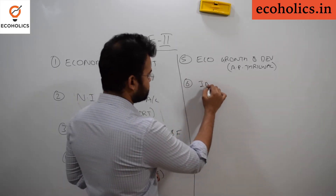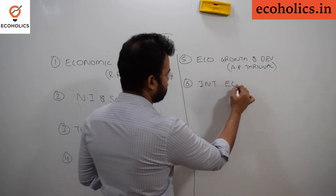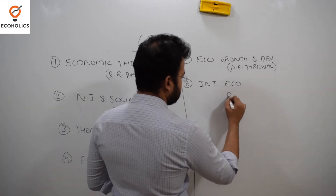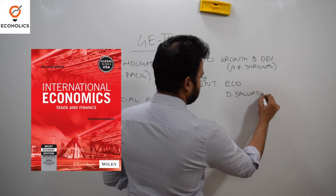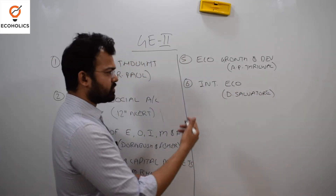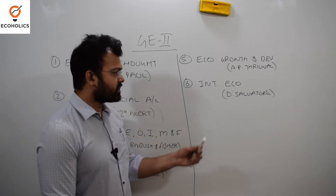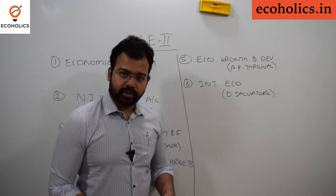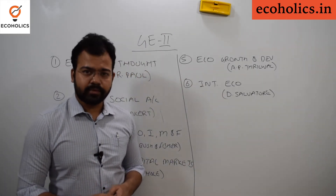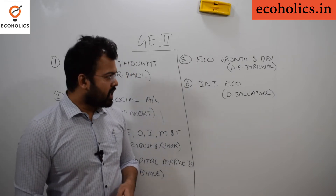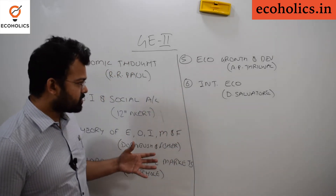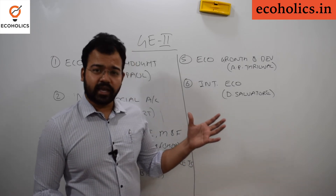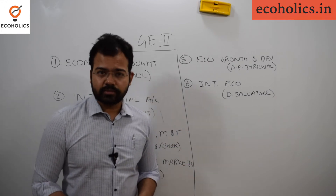The sixth topic is International Economics, and for International Economics there is only one book — the best book known as Dominic Salvatore, which is considered the Bible for International Economics. If you do not have this book, you can take a PDF from the instructor via WhatsApp — the number is given in the description. You can also find these books online or in offline shops.